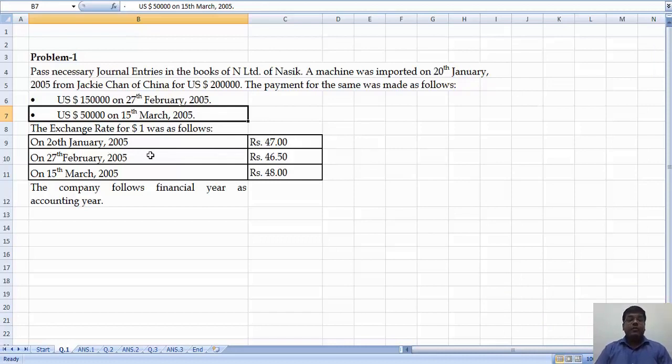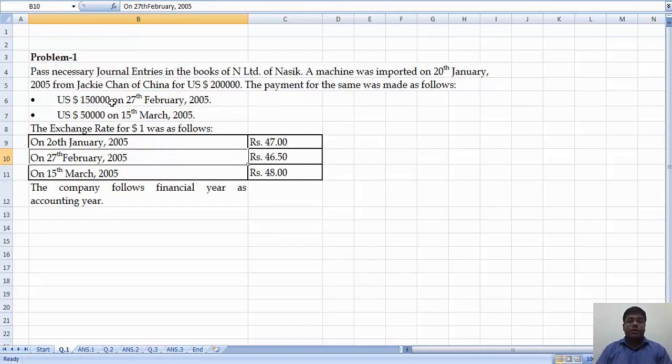But when we make the payment on 27th February for 1,50,000, the rate has gone to 46.50, and on 15th March 2005 the rate was 48.